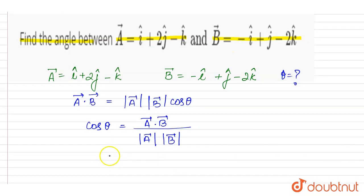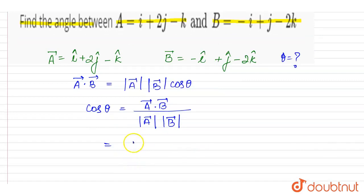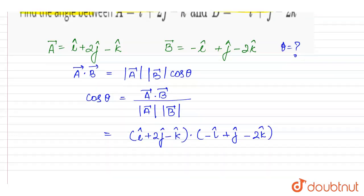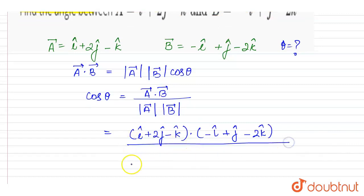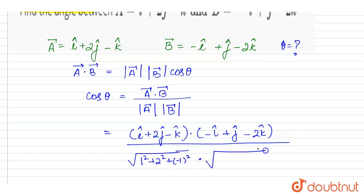So cos theta is equal to a dot b divided by the magnitude of a vector into the magnitude of b vector. Now a vector is i cap plus 2j cap minus k cap, and b vector is minus i cap plus j cap minus 2k cap. The magnitude of a vector equals the square root of 1 squared plus 2 squared plus (minus 1) squared, and the magnitude of b vector equals the square root of (minus 1) squared plus 1 squared plus (minus 2) squared.